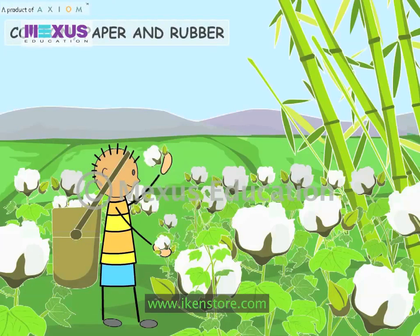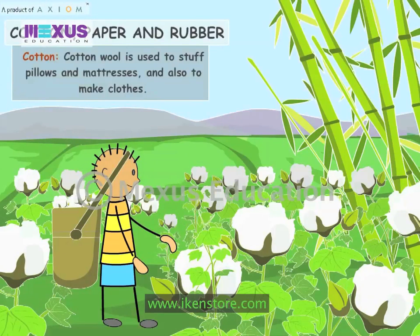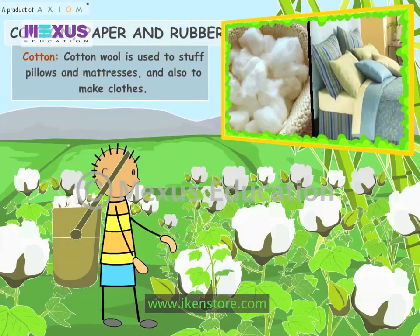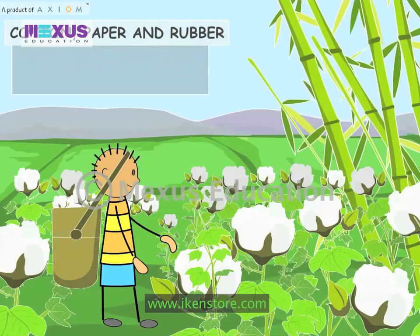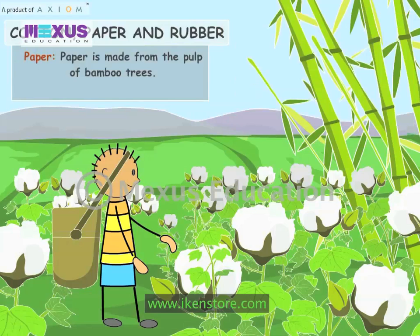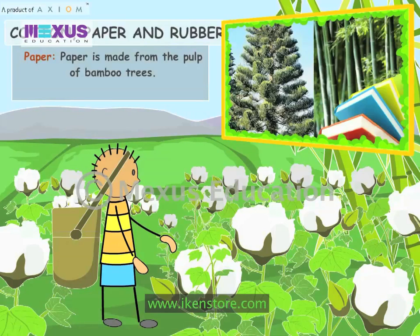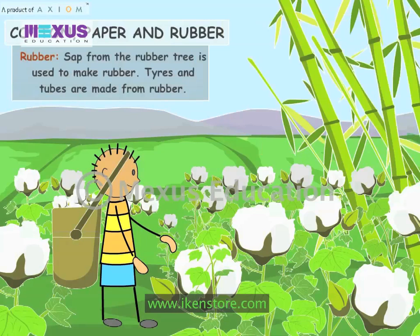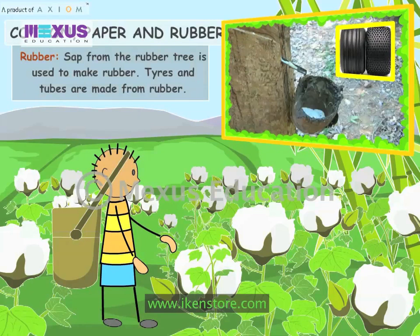Seeds, Cotton, Paper and Rubber. Cotton wool is used to stuff pillows and mattresses and also to make clothes. Paper is made from the pulp of bamboo trees. Sap from the rubber tree is used to make rubber. Tyres and tubes are made from rubber.